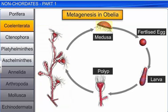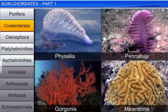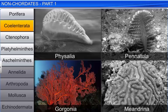Polyps produce medusae asexually, and the medusae form polyps sexually. This phenomenon is called metagenesis. Some common coelenterates are Physalia, Pennatula, Gorgonia, and Meandrina.